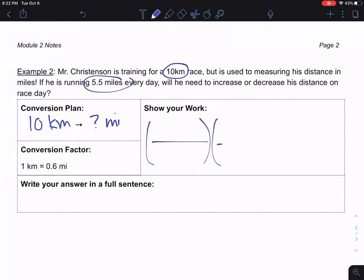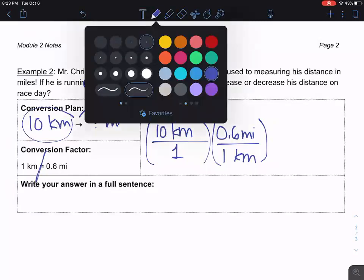I start by drawing my two fractions, and I put the first part of my conversion plan on the top, my starting point, and I put that over one. Then I'm going to break apart my conversion factor and I'm going to think about where I want those two pieces to go. I want the kilometers to go on the bottom so that it can cross out with my starting number, and 0.6 miles on the top, so my new units will be on the top.